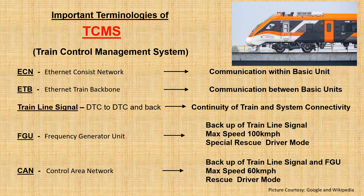Going into the details, it is important to understand the terminologies of TCMS. ECN or Ethernet Consist Network is used for communication within basic unit. ETB or Ethernet Train Backbone is used for communication between basic units. Train Line Signal is used for continuity of train and system connectivity. FGU or Frequency Generator Unit is used as a backup of train line signal, allowing Vande Bharat to run at a max speed of 100 kmph as a special rescue driver mode. CAN or Control Area Network works as a backup of train line signal and FGU, allowing Vande Bharat to run at a max speed of 60 kmph, known as rescue driver mode.